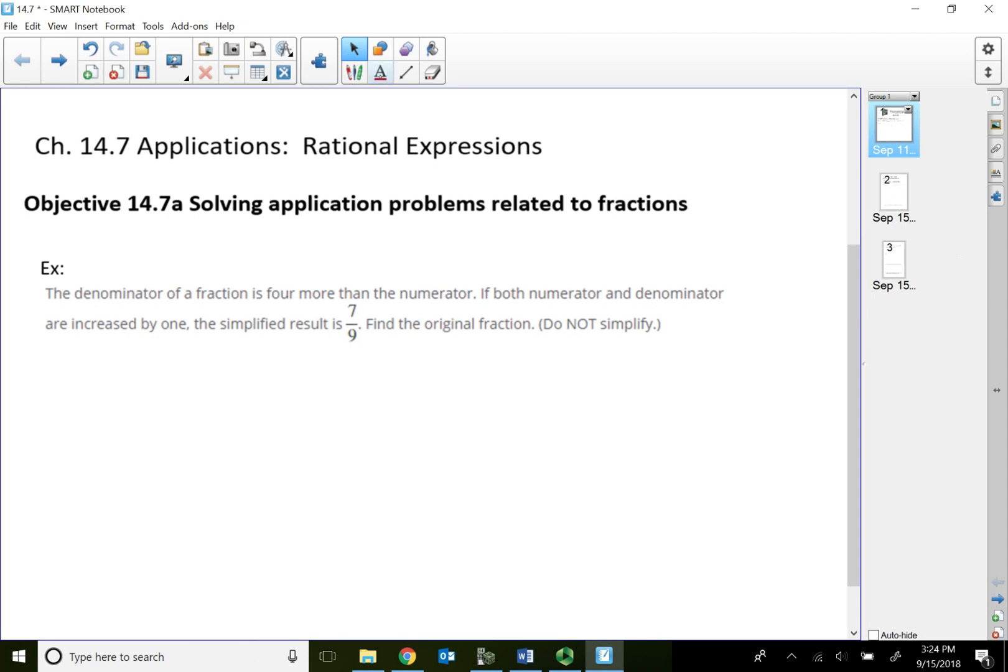The denominator of a fraction is four more than the numerator. So who is four more than who? The denominator is four more than the numerator. So I'm comparing between denominator and numerator. Of the two items I'm comparing, numerator is listed at the end. So numerator is going to be x. Denominator is four more than means plus four than the numerator x. So basically, this numerator x over four plus x is going to be my original fraction.